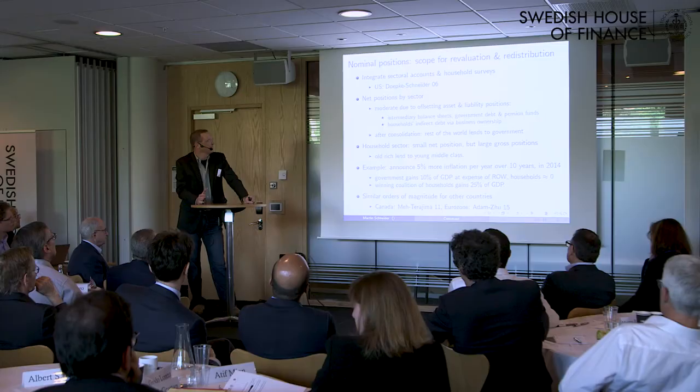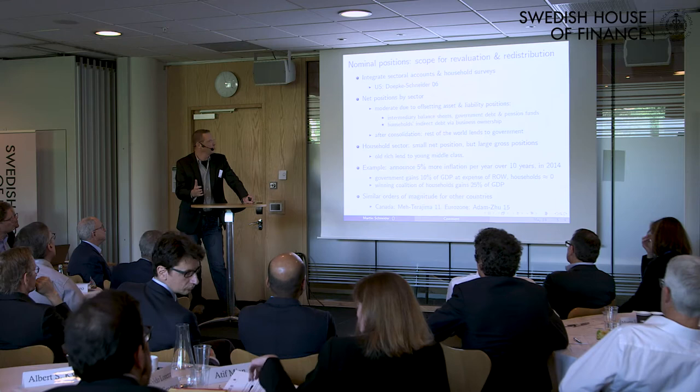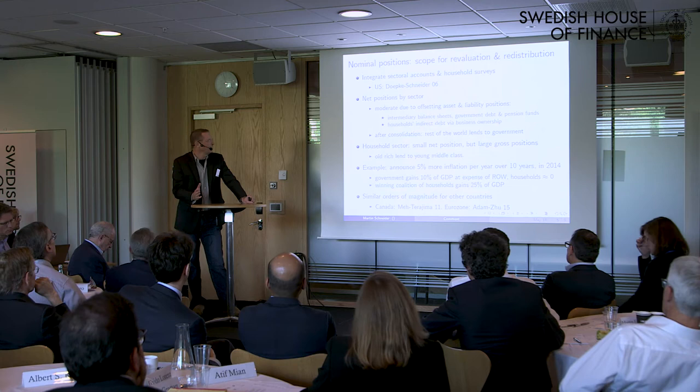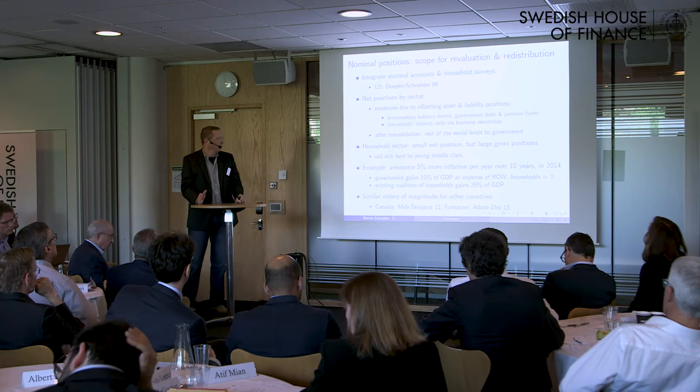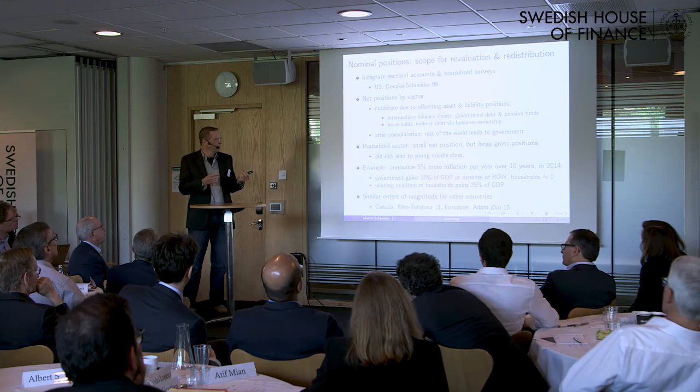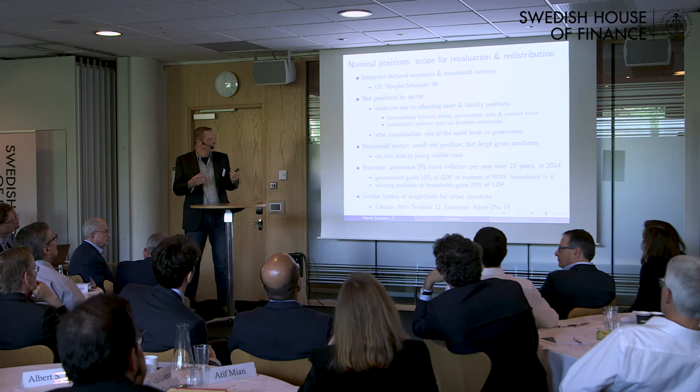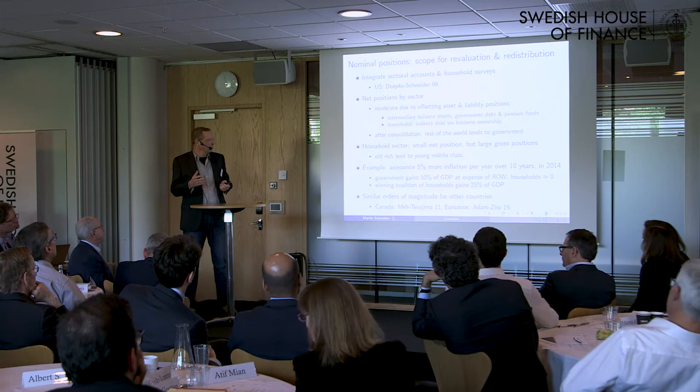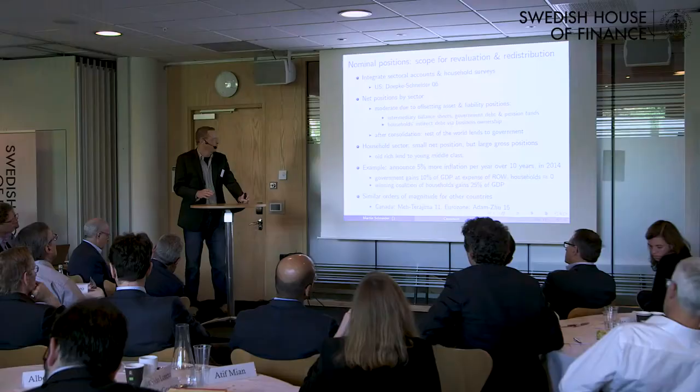With government debt as a dominant unit of account, it's important that inflation is not just a cheap way for the government to add contingencies to its own debt, but that there are also distribution effects via private contracts using the same unit of account. For nominal positions, we'd like to integrate sectoral accounts with household surveys. For the US in recent years, net positions by sector are moderate because there are many offsetting asset and liability positions — intermediary balance sheets, government with both debts and pension funds, households with indirect debt through business ownership. After consolidation, essentially the rest of the world lends to the US government, and households have a relatively small net position but still large gross positions, mostly from housing — the old rich lend to the young middle class.